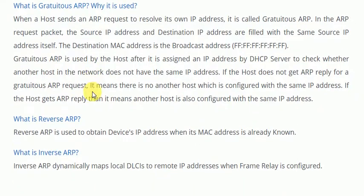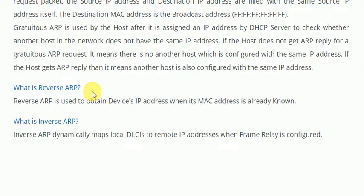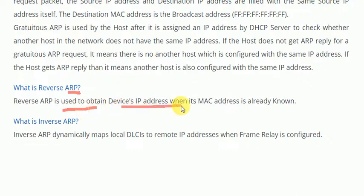What is reverse ARP? In simple ARP, we resolve the MAC address from the IP address. The reverse is true for reverse ARP — from the MAC address, we resolve the IP address. Reverse ARP is used to obtain the device's IP address when the MAC address is already known.